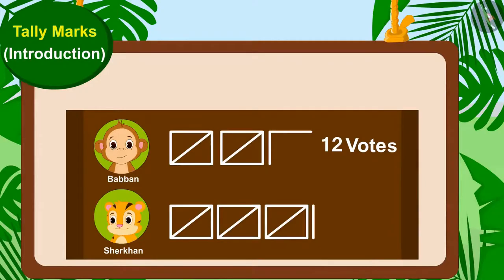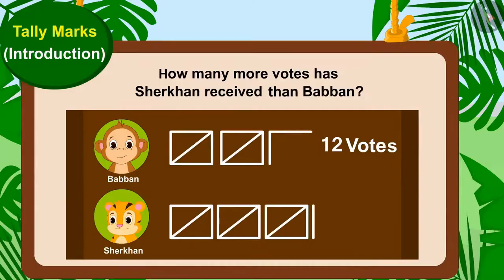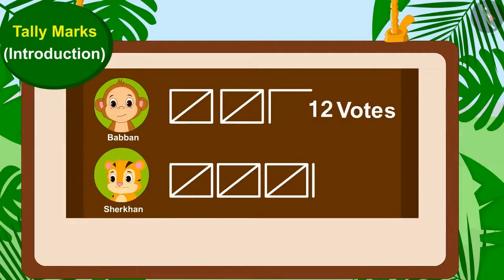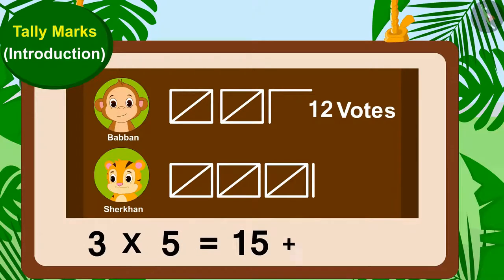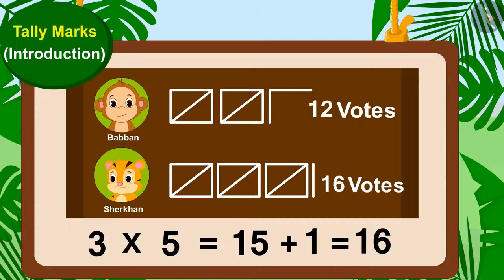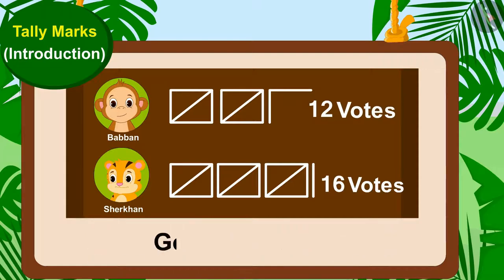Children, can you tell how many more votes has Shere Khan received than Babban? Shere Khan's votes consist of three groups of tally marks and one line. Shere Khan has got three times five — fifteen — plus one — sixteen votes. And Babban has got 12 votes. This means Shere Khan has got four votes more than Babban.